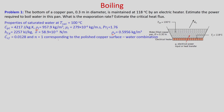We also need the value of CSF and N corresponding to the polished copper surface and water combination, and that is given. Now let us first find the excess temperature. Delta T is T_W minus T_sat. In this case T_W is 118 degree centigrade, and T_sat is 100 degree centigrade, so delta T equals 18 degree centigrade.